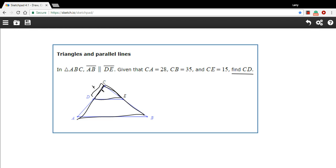So I'm just going to call that X. And let's go ahead and fill in the diagram the rest of the information. We have CA, that's this whole length here, is 28. And CB, this whole length here, is 35. And CE is 15.